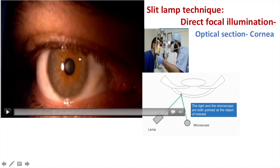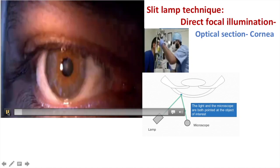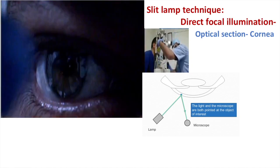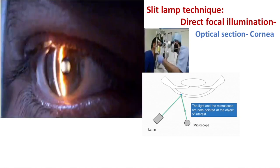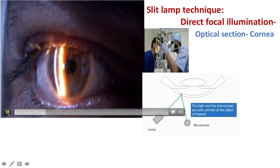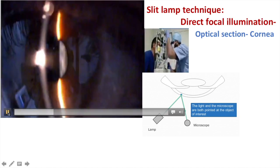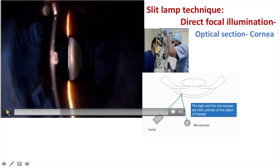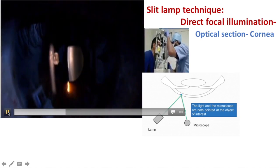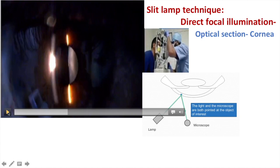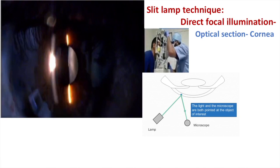Here you can see the diffuse illumination. What I will do is remove the diffuser first and then make a slit. Now when I make a slit, I can increase the illumination. You can see there is a slit of the entire cornea, but the periphery of the cornea is a little steeper, so I can decrease the height of the slit and make the width very small.